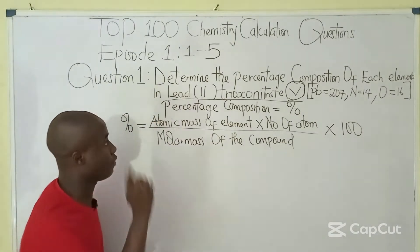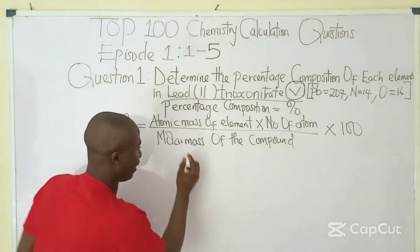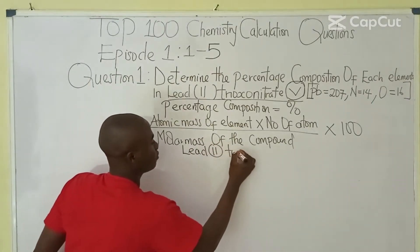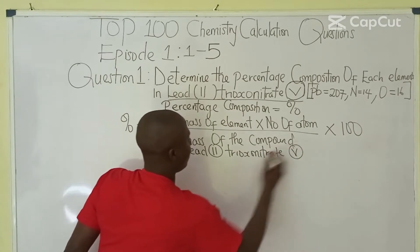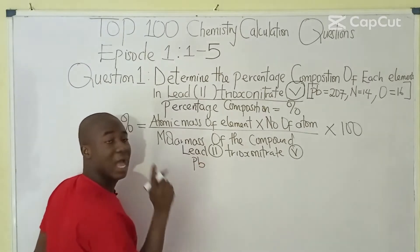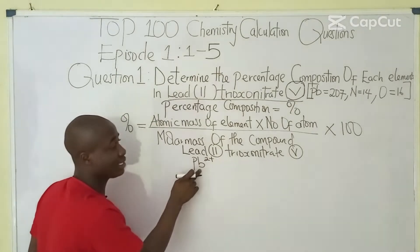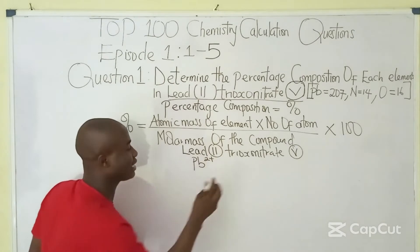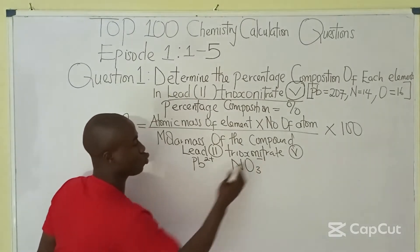The question we have to ask ourselves is: what is the chemical formula of lead(II) trioxonitrate(V)? The chemical symbol of lead is Pb. In this question they were specific and said lead(II). Trioxonitrate(V) is actually a radical and it is symbolized as NO₃⁻, specifically minus 1.